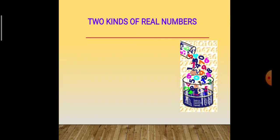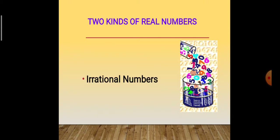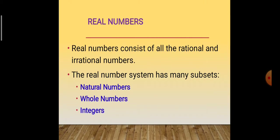We have two kinds of Real Numbers. First one is Rational Numbers, and second one is Irrational Numbers. Real Numbers consist of all the rational and irrational numbers. The Real Numbers system also has many subsets: natural numbers, whole numbers, and integers.